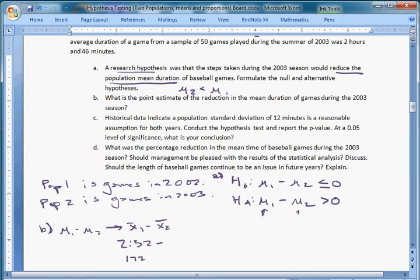And 2 hours and 46 minutes is the sample from 2003, that's going to be 166. So, 172 minus 166 is 6. That's 6 minutes shorter. That's our best guess—it shortened it by 6 minutes. So that's part B. We successfully calculated X̄₁ minus X̄₂.